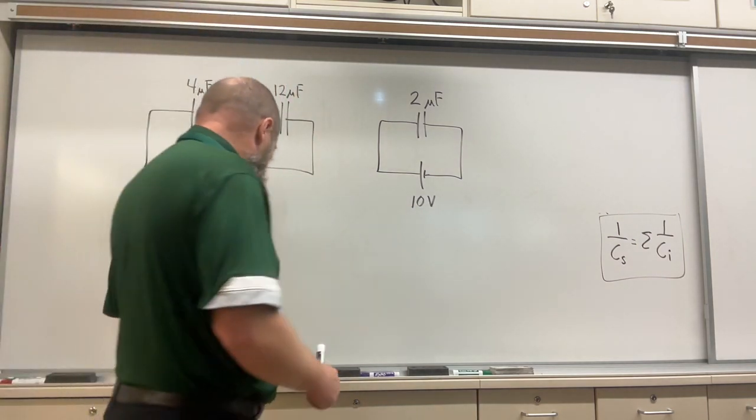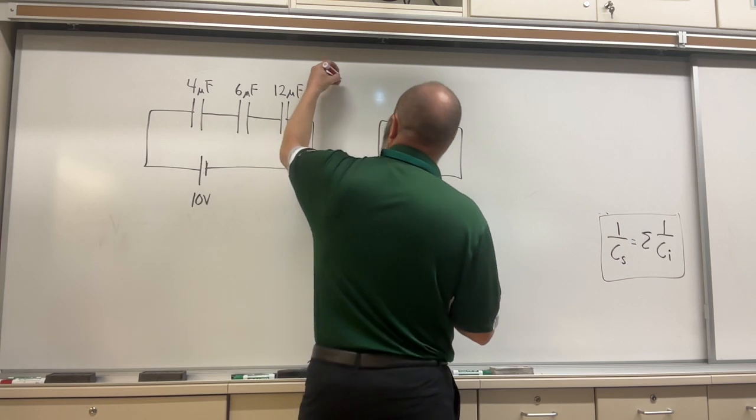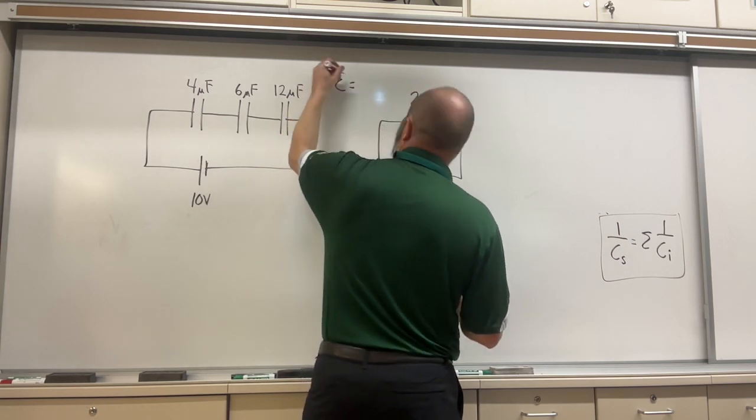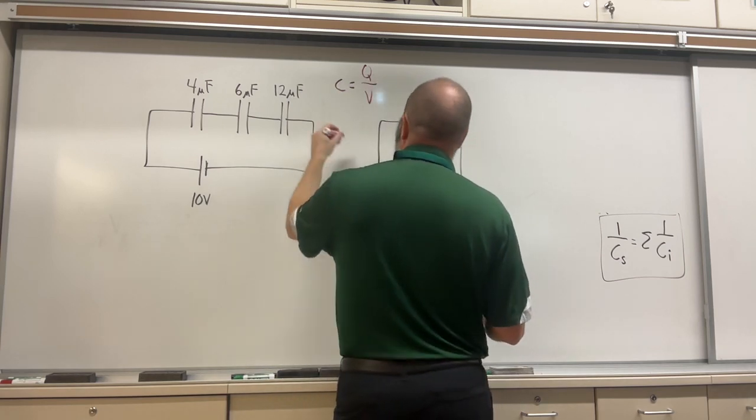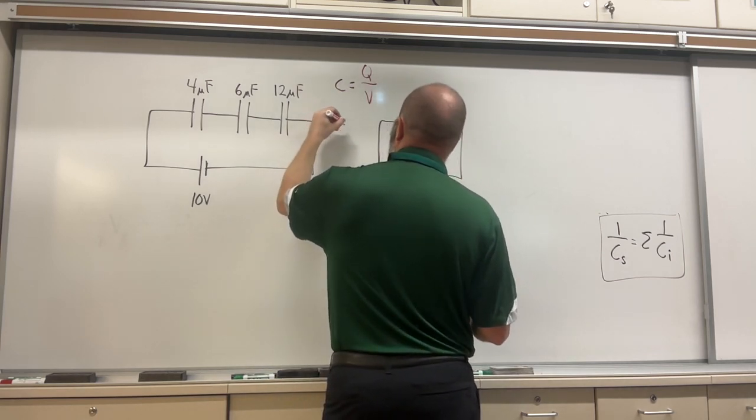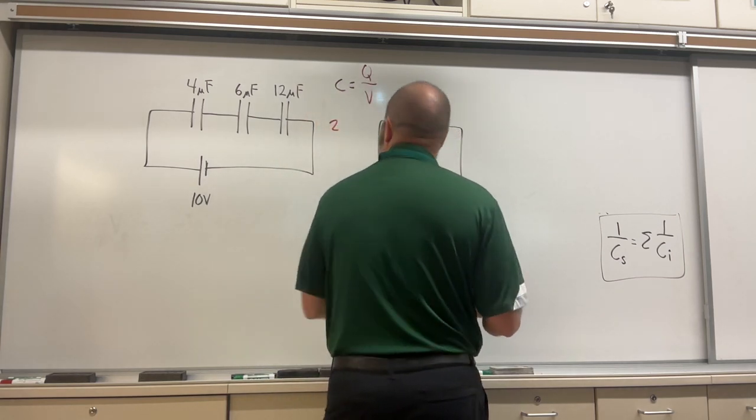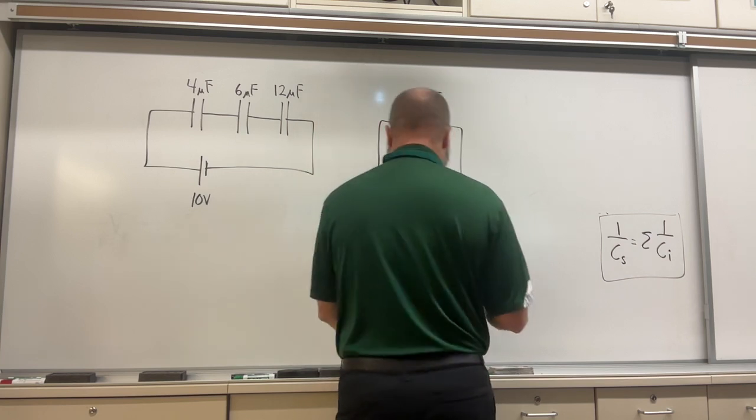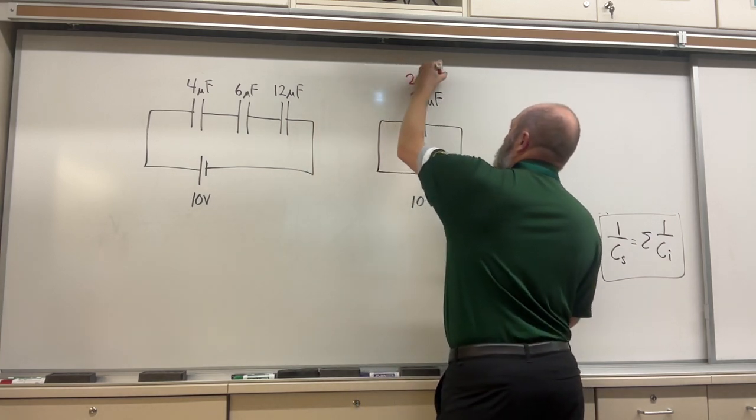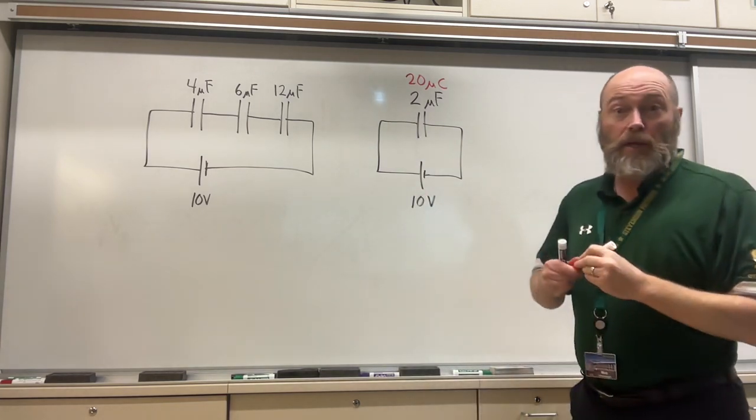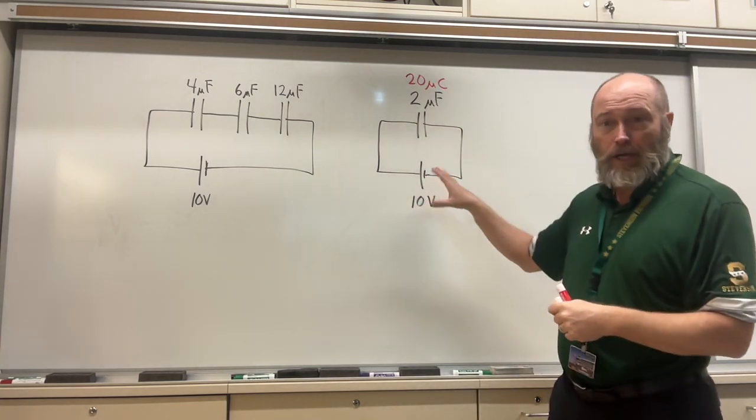And then you can use your equation C equals Q over V. And if you do that equation, you get two micro times this, and I'm going to use red for my charge. So that means there are 20 microcoulombs total in my circuit.